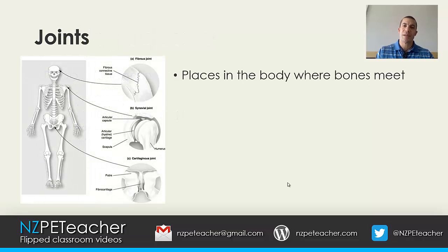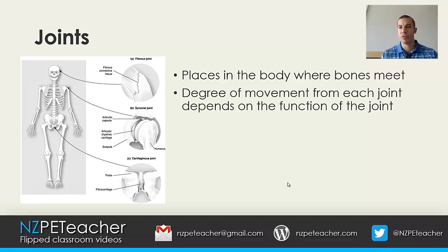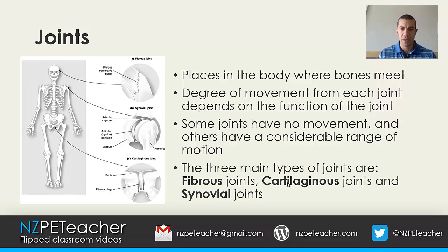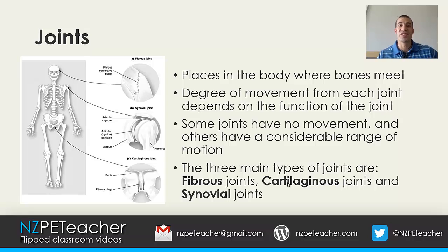Joints are places in the body where bones meet. The degree of movement from each joint depends on the function of the joint — some joints have no movement and others have a considerable range of motion. The three main types of joints in the body are fibrous joints, cartilaginous joints, and synovial joints. We will focus a little bit more on synovial joints and you'll see why shortly.